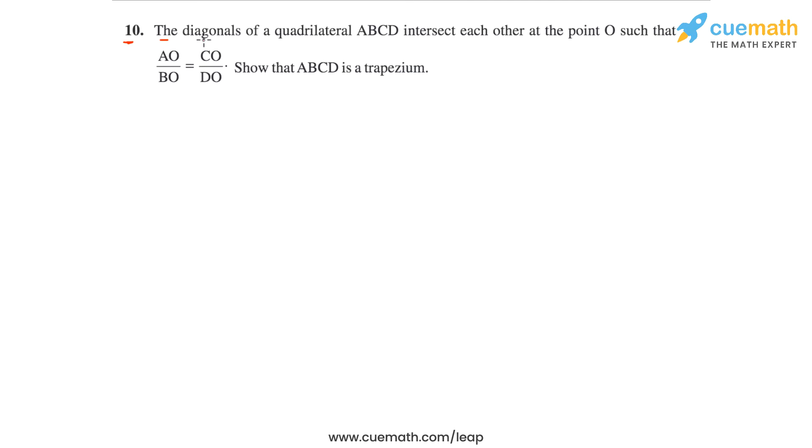Question 10 says the diagonals of a quadrilateral ABCD intersect each other at the point O such that AO by BO is equal to CO by DO.